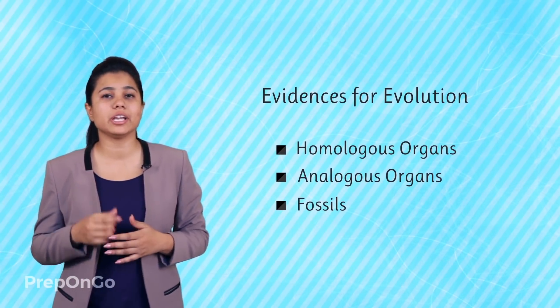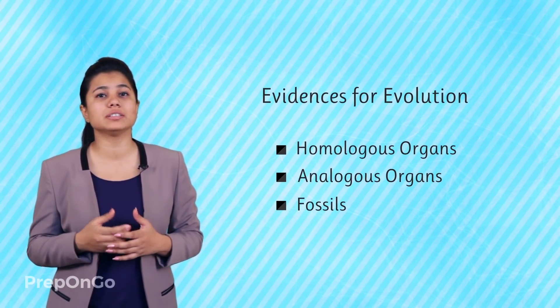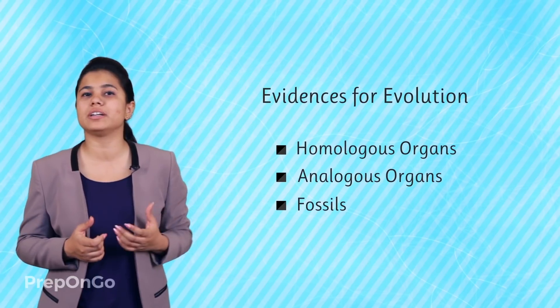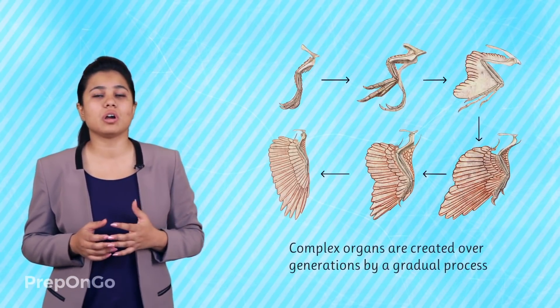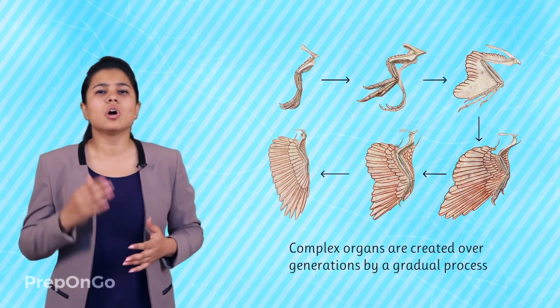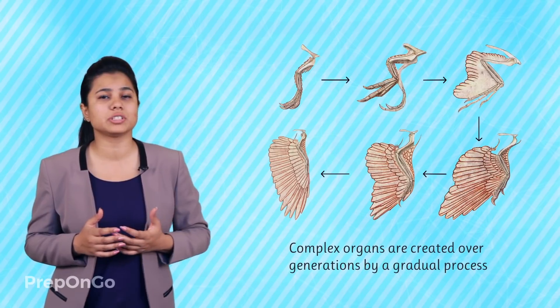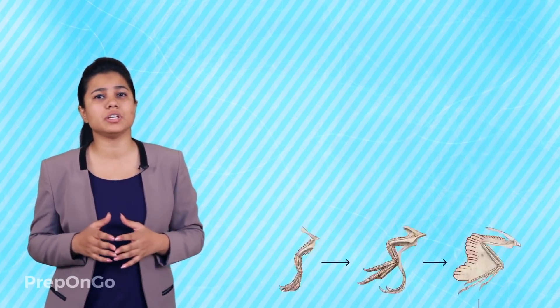Hello everyone. In the last video we have seen sources which provide evidence for evolution, which proves that complex organs have been selected for the advantages they provide. But how can these complex organs be generated by a single change in the DNA? Surely complex organs must have been created bit by bit over generations — their formation is a gradual process and will take millions of years to happen.